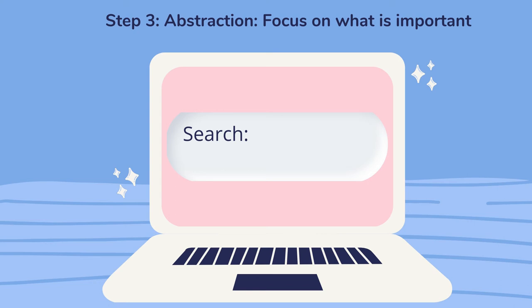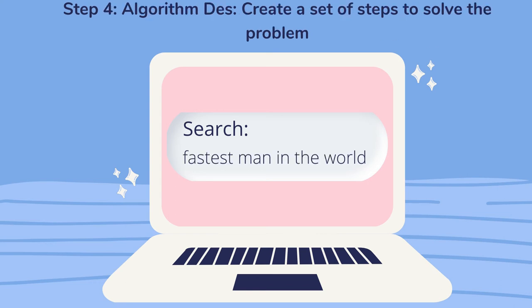Andy will use his computer. Step 4: Algorithm design — create a set of steps to solve the problem. How do we design an algorithm? To find his information, Andy performs a search online. One, he navigates the search engine on his web browser. Two, he types in his keywords. And three, he presses enter on his keyboard. The steps Andy followed is an algorithm for performing a search online.